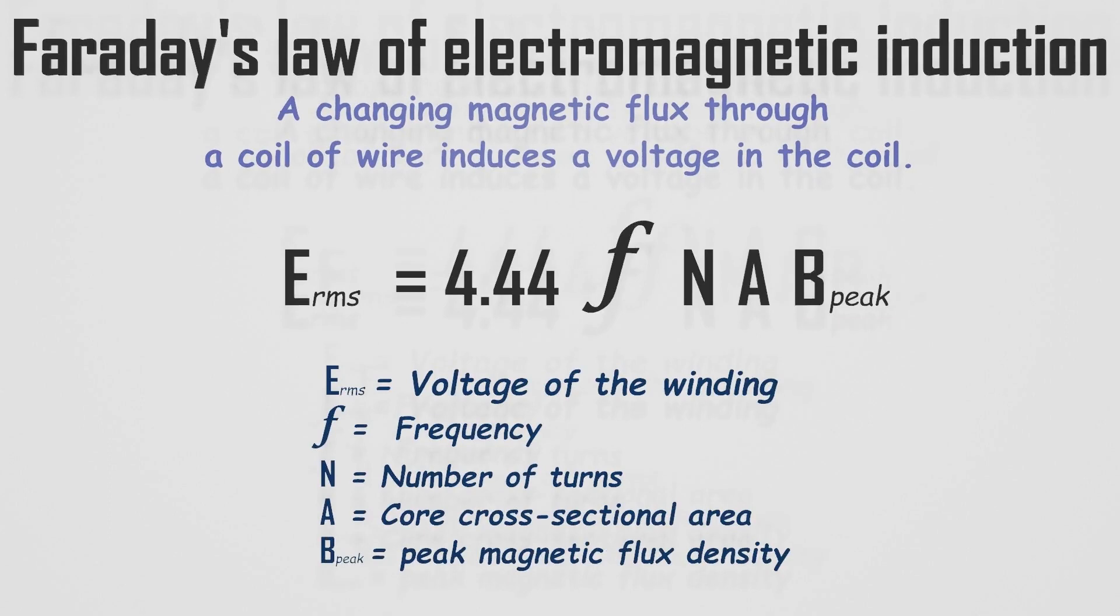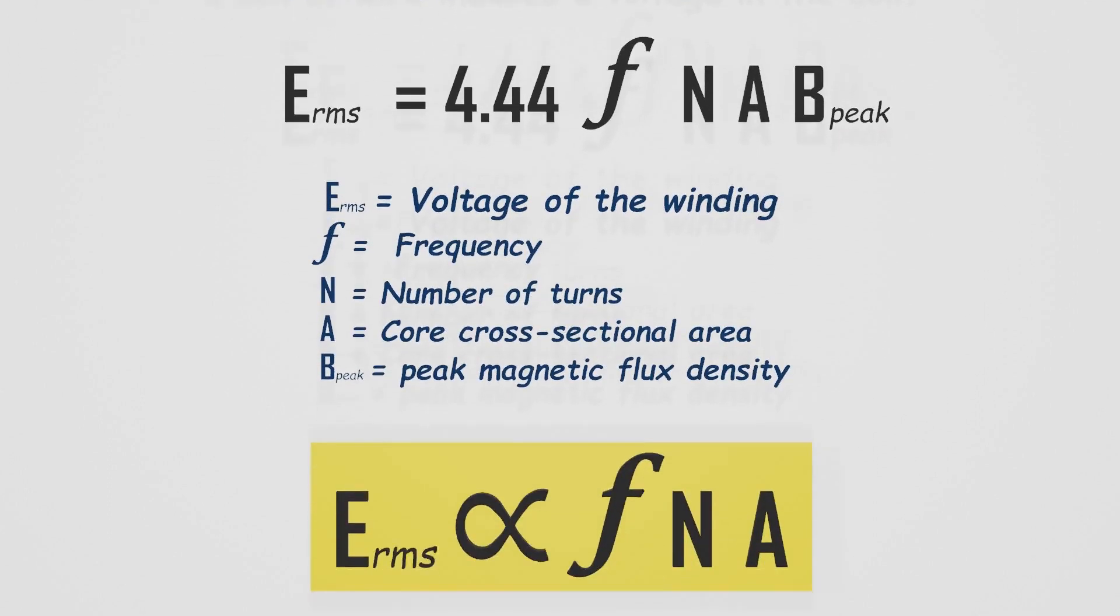I'm not going to explain the math in depth here. Simply, in a transformer, the voltage of primary coil is proportional to the frequency, the number of turns, and area of the core.